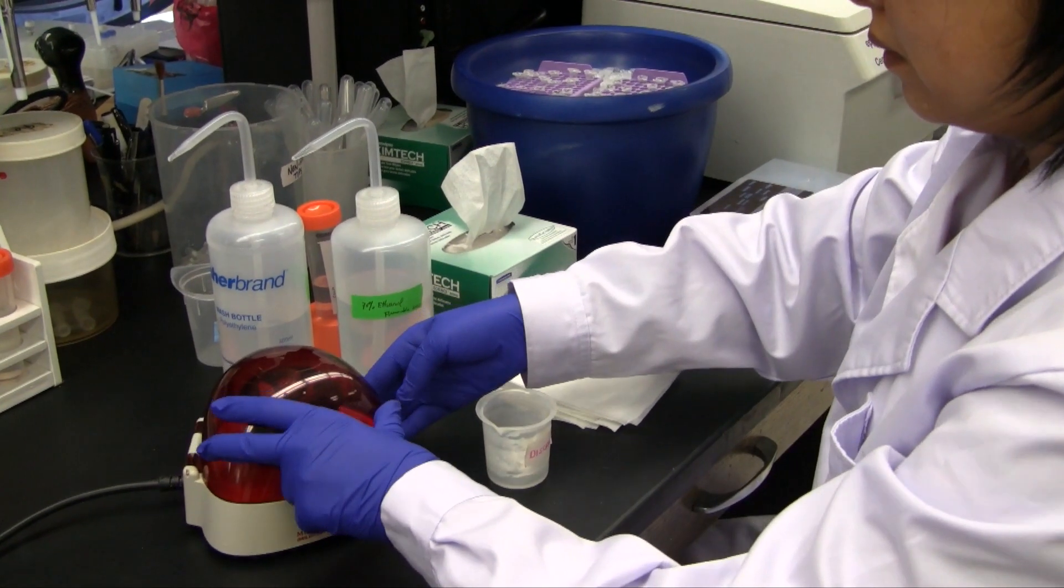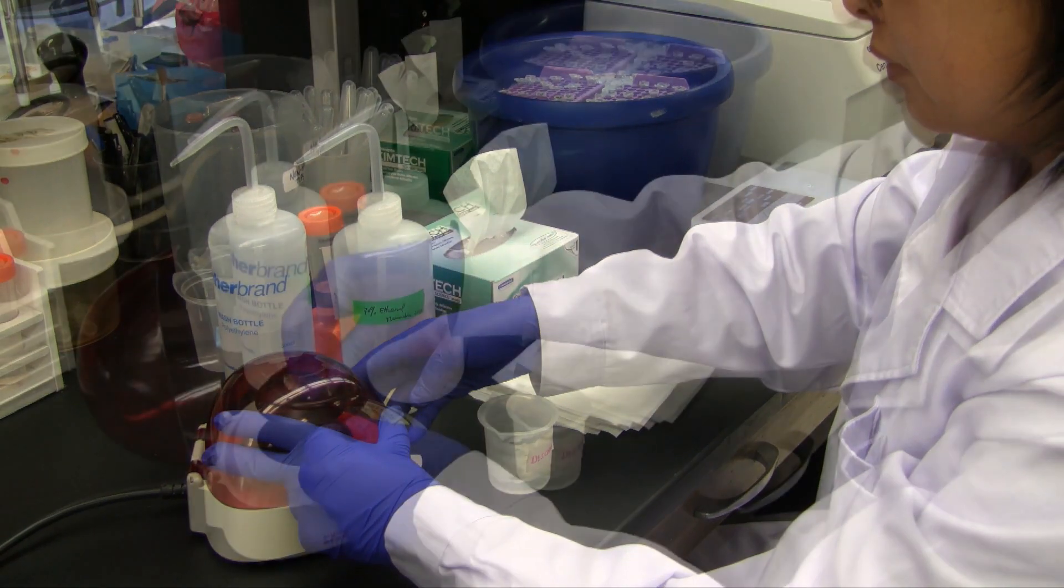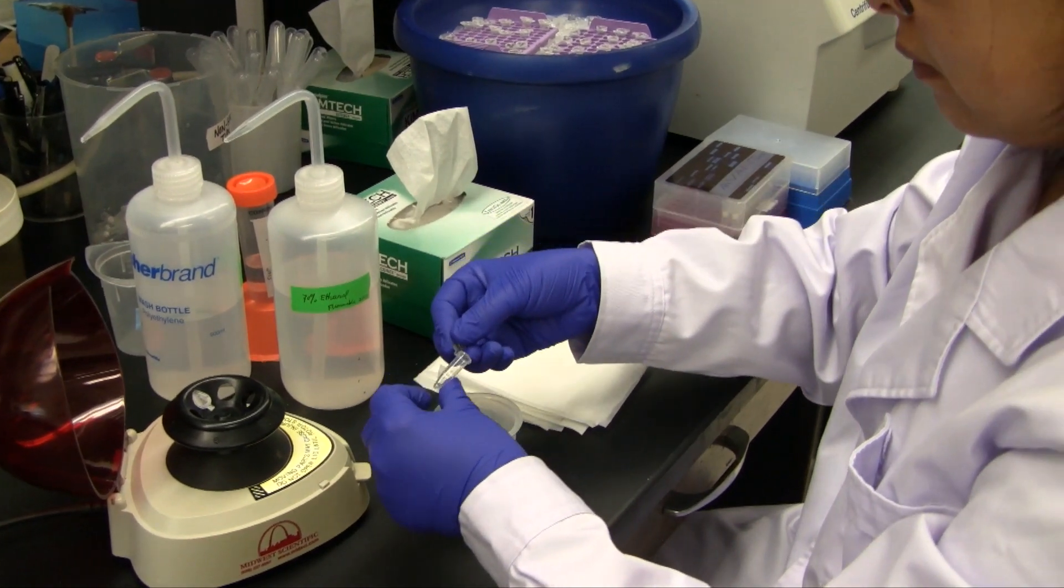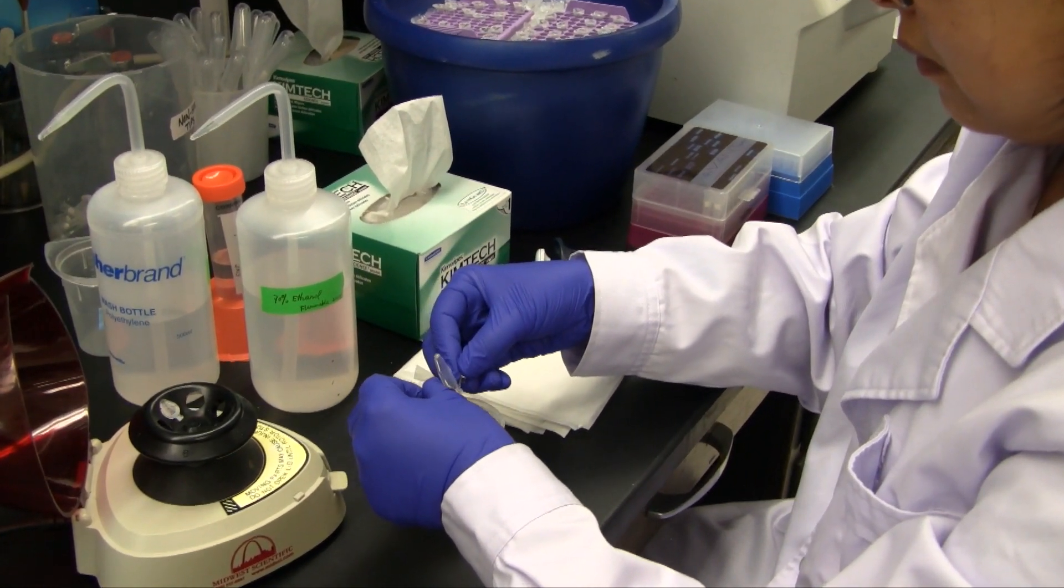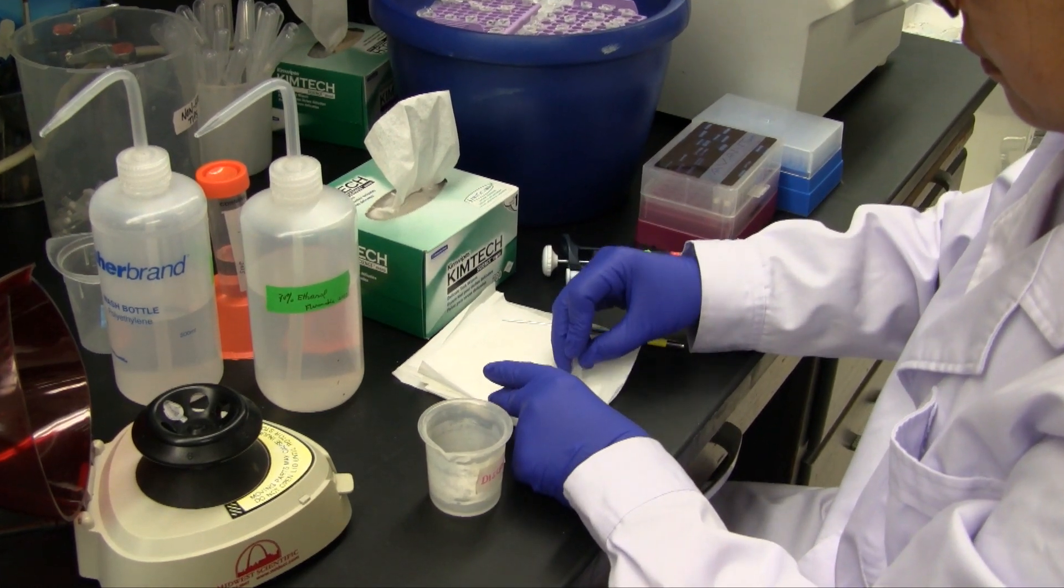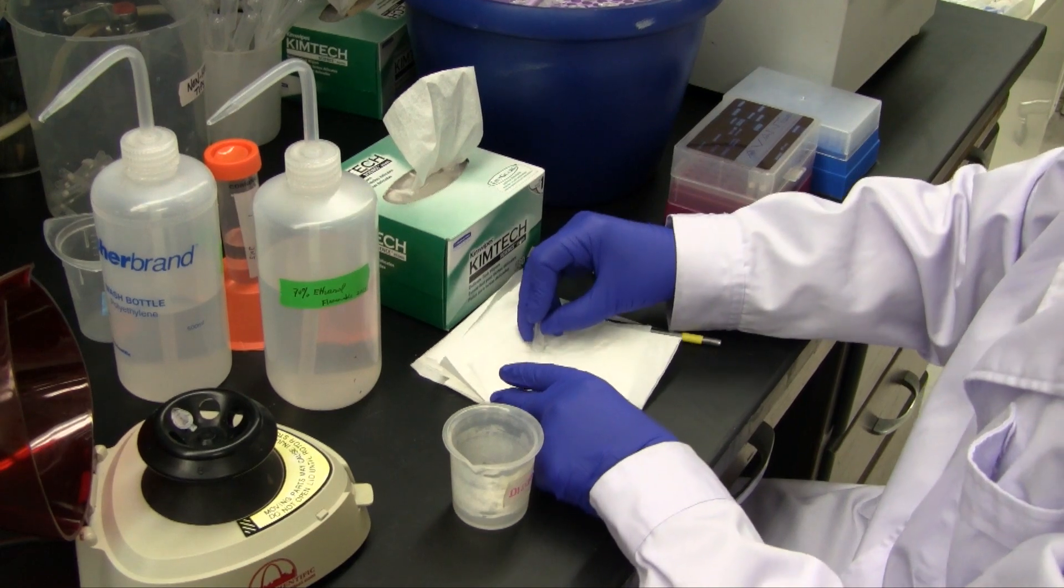The tubes are then centrifuged at 2000 RPM to pellet the cells. After centrifugation, the ethanol is poured off carefully. Excess fluid is removed by blotting the rim. If desired, the remaining ethanol may be removed with a non-filtered pipette tip.